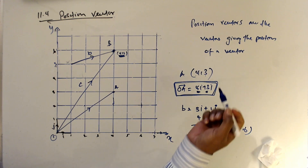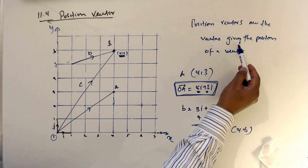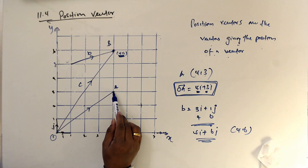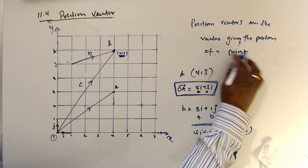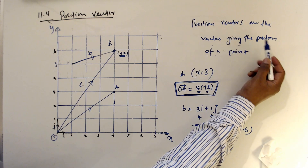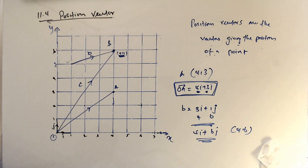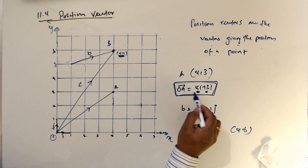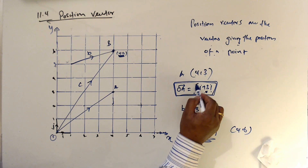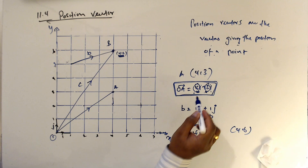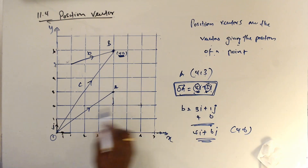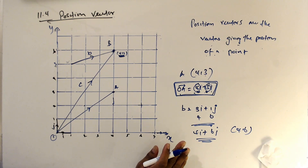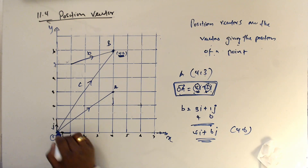That's why we say position vectors are the vectors that give the position of a point. Position vectors are the vectors that give the position of a point. So by the vector 4i plus 3j it will show the position. To show the position from a vector, it has to start from the origin. If it is a position vector, it must start from the origin.